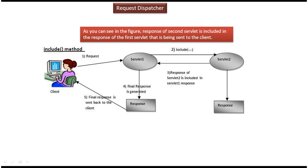Here we will see how the include method works. The client sends a request to servlet one. Suppose servlet one wants to include the content of servlet two in the final response of servlet one and send it back to the client. Then servlet one will use the include method to include the response of servlet two in servlet one's response and send the final response back to the client. This is how the include method works.